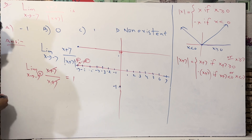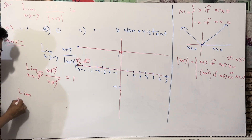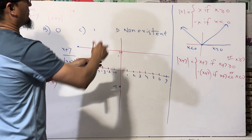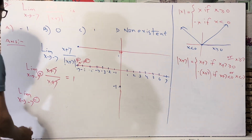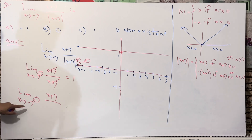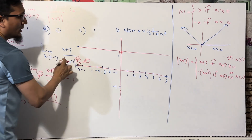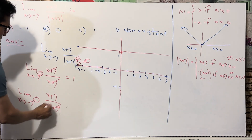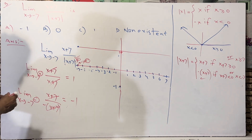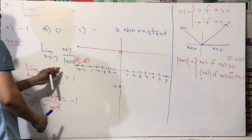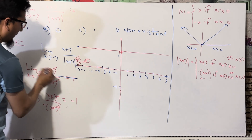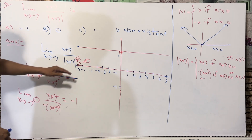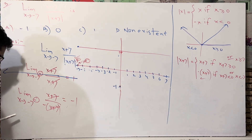For the left-hand limit — x tending to minus 7 from the negative side, meaning values like minus 8, minus 9, minus 10 — we replace mod(x + 7) with minus(x + 7). So (x + 7) divided by minus(x + 7) cancels to give minus 1. The graph on this side always gives minus 1. So we have plus 1 on the right and minus 1 on the left.